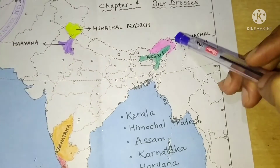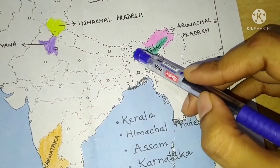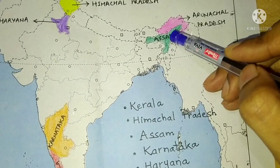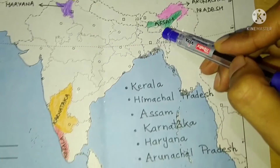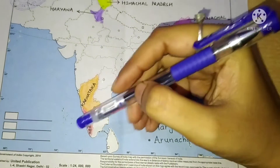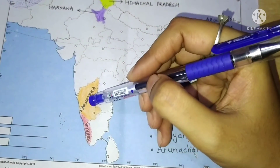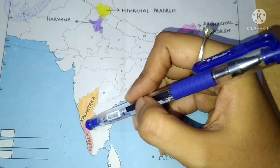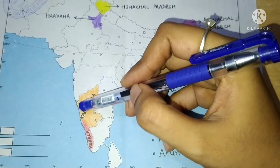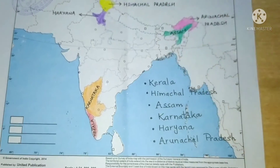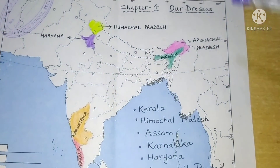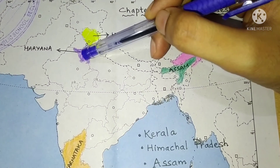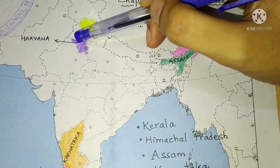Then is Assam. The place where I have filled green color — this is Assam. Next is Karnataka, just above Kerala — the complete part where I have filled orange color is Karnataka. Next is Haryana — below Himachal Pradesh we have Haryana, shown with purple color.